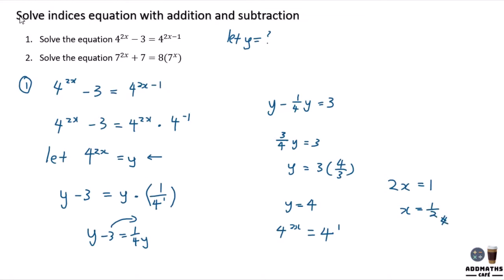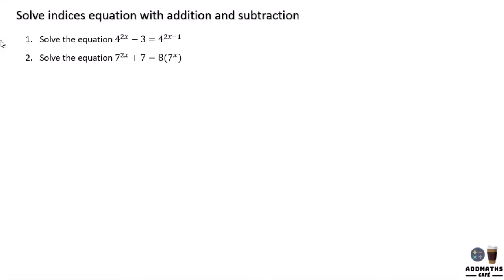Let's try another question. I have 7^(2x) + 7 = 8(7^x). And in this case, I can't see anything that is related.